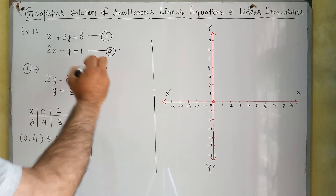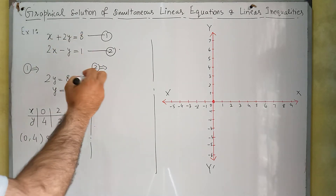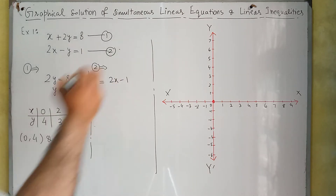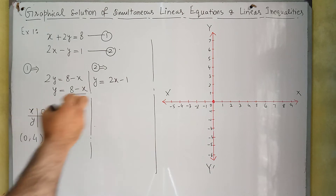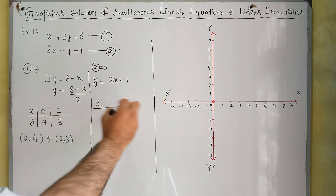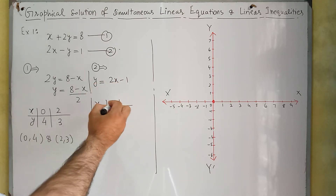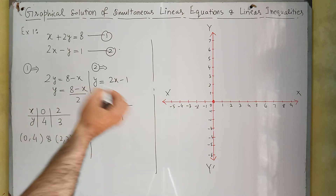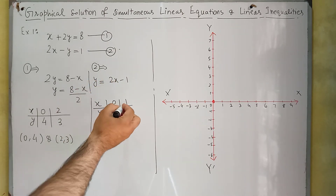Similarly, we can find coordinates for equation 2. Again, I'm going to make Y the subject of this formula, which gives Y is equal to 2X minus 1. We need to make a table again. If we substitute X equal to 0, we will have Y equal to minus 1, and if we substitute X equal to 1, then Y will also be equal to 1.